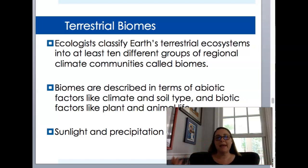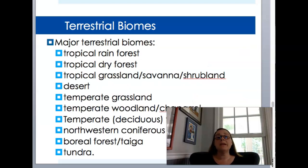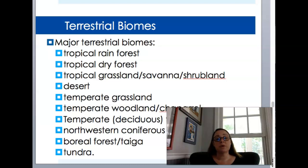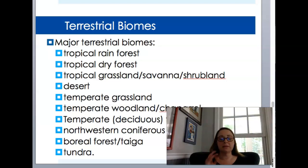There are roughly 10 terrestrial biomes, sometimes more depending on what book you're looking at, but we'll talk about the ones in your book. The major terrestrial biomes — you should have heard of most of these before. Tropical rainforest, tropical dry forest (that might be a new one), tropical grasslands, savannah, and shrubland all kind of fall in the same area.